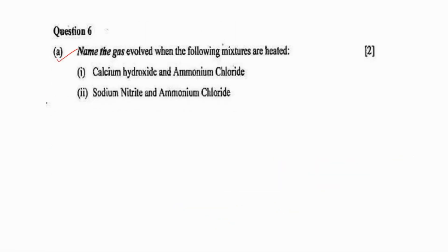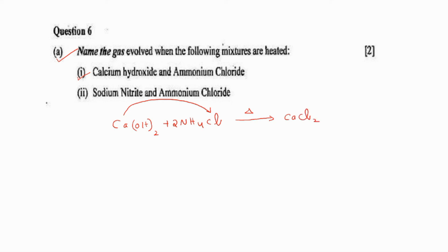Name the gas evolved when the following mixtures are heated: calcium hydroxide and ammonium chloride. They are not asking the balanced chemical equation, but write it to avoid mistakes. Ammonium chloride and calcium hydroxide, when heated — calcium and chlorine combine to form calcium chloride. Ammonium hydroxide is the expected product, but as we are heating it, it decomposes to form ammonia and water. So the gas evolved is ammonia gas.